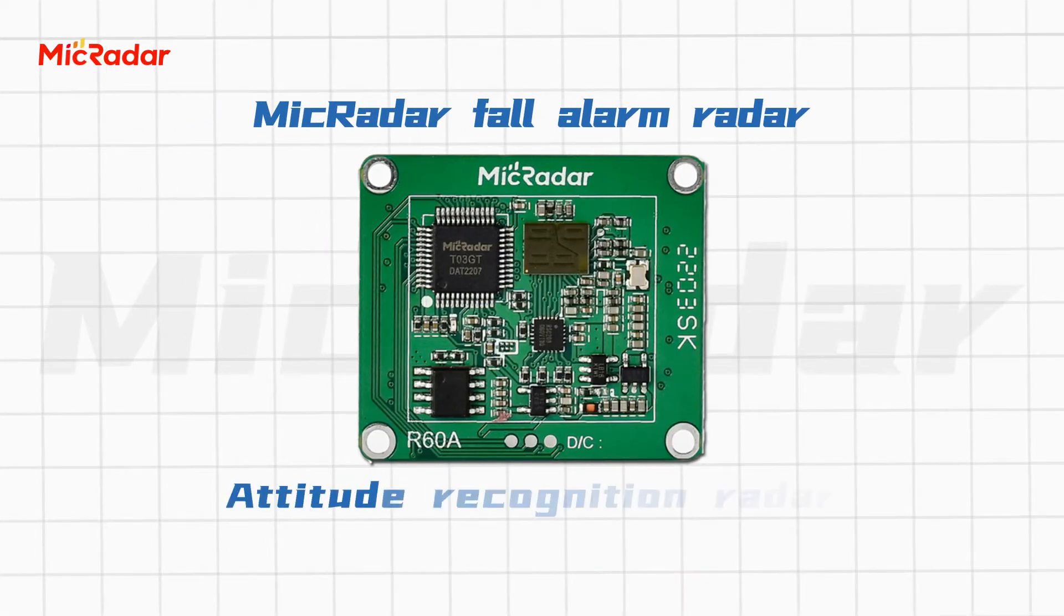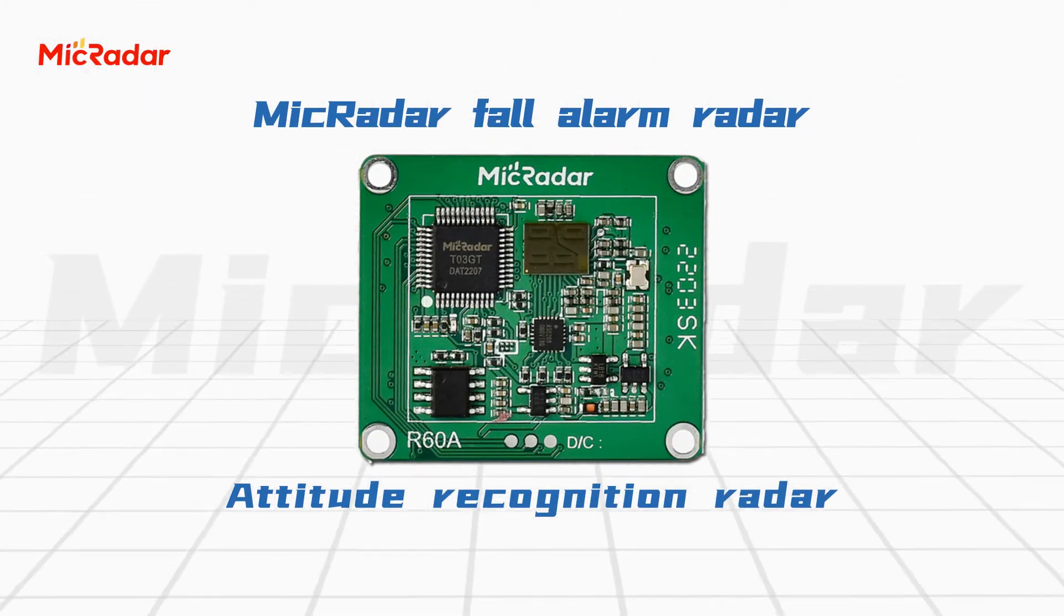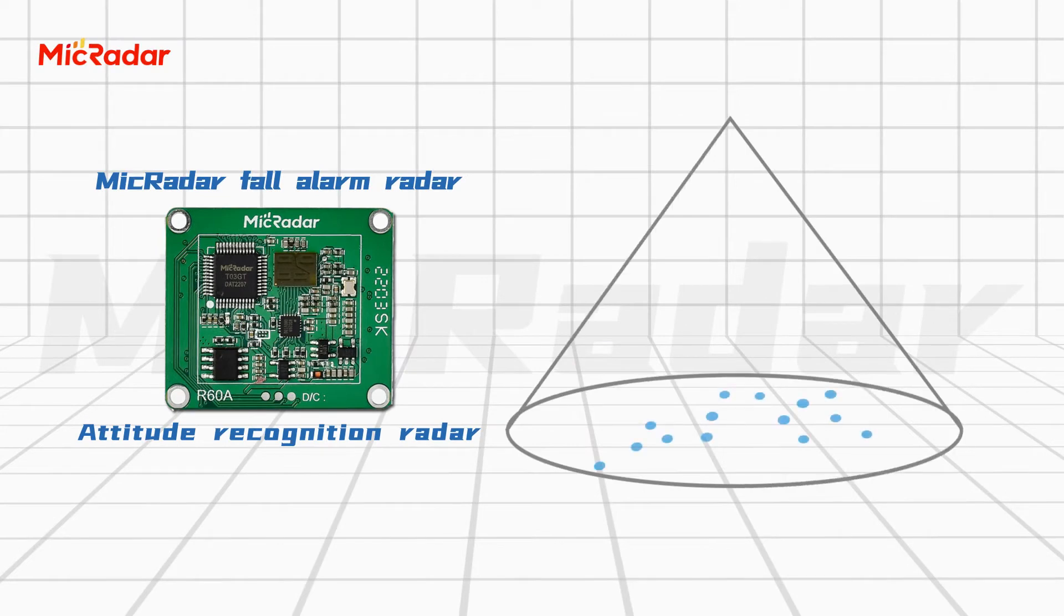The Micradar Fall Alarm Radar is a gesture recognition radar. Through point cloud mapping, human posture can be accurately recognized.